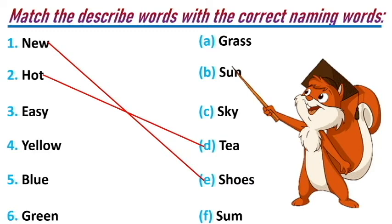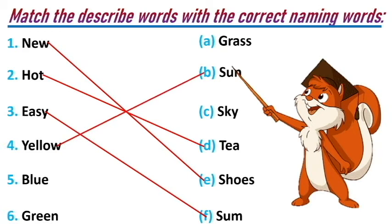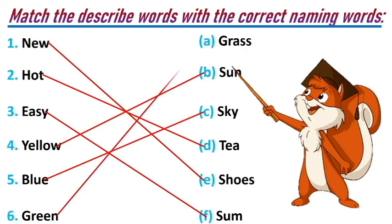Third one — easy goes to sun. Fourth one — yellow. What has yellow color here? It's sun — yellow sun. Fifth one — blue goes to sky — blue sky. Sixth one — green goes to grass — green grass. You have finished the third activity.